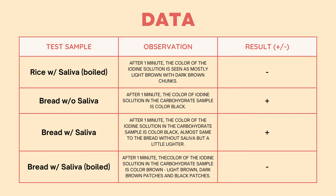Bread without saliva: after 1 minute, the color of iodine solution is black, which indicates a presence of carbohydrates. Bread with saliva: after 1 minute, the color is black, almost the same as bread without saliva but a little lighter, indicating a presence of carbohydrates. Bread with boiled saliva: after 1 minute, the color is brown to light brown with dark brown patches and black patches, which indicates a negative presence of carbohydrates.